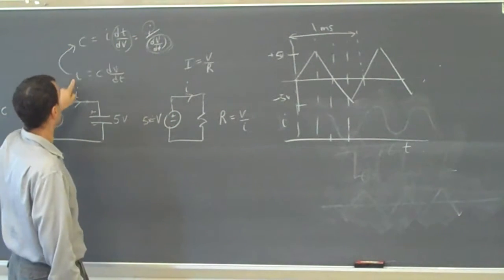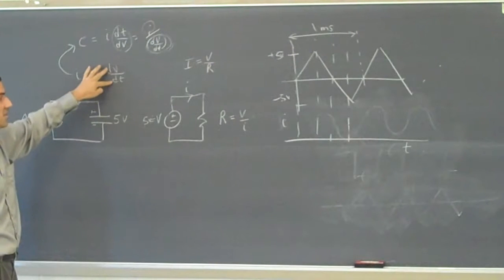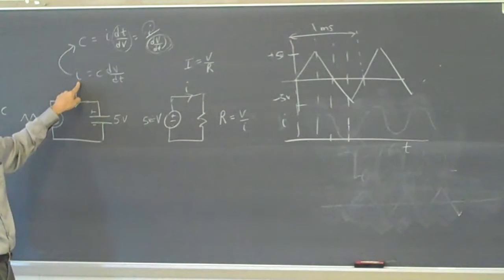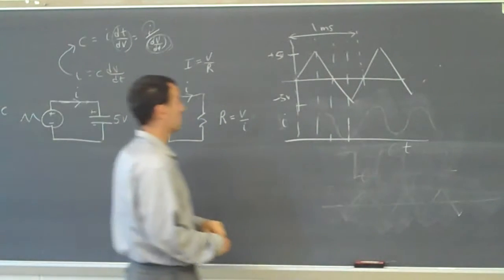The current that I'll measure is the capacitance times dv dt, so if dv dt is positive, then the current should be positive. So I'll get some value for current.